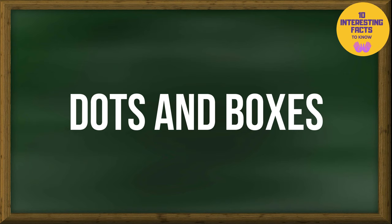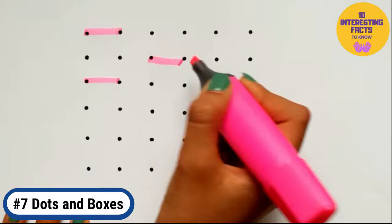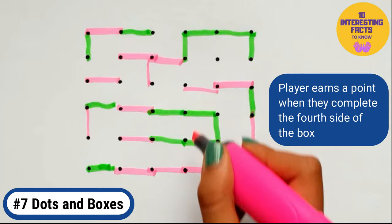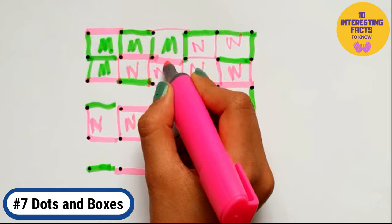Dots and boxes. This game starts with a grid of dots drawn on a piece of paper. Players use different coloured pens to draw lines between the dots. A player earns a point when they complete the fourth side of a box and they also get to take another turn when they do that. Players put their initials in the box to record the point. When all the dots are connected, the player with the most completed boxes wins.